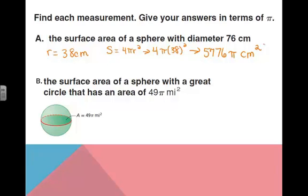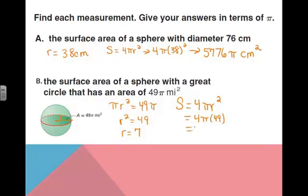This last one says, find the surface area of the sphere with a great circle that has an area of 49π. Well, if the great circle has an area of 49π, then that means πr² is equal to 49π. Divide both sides by pi, and you get r² = 49, or r = 7. So the radius of this sphere is 7. If we want to find the surface area, the surface area is equal to 4 times π times r², which is 4 times π times 49 in this case. And 49 times 4 is 196π square miles.